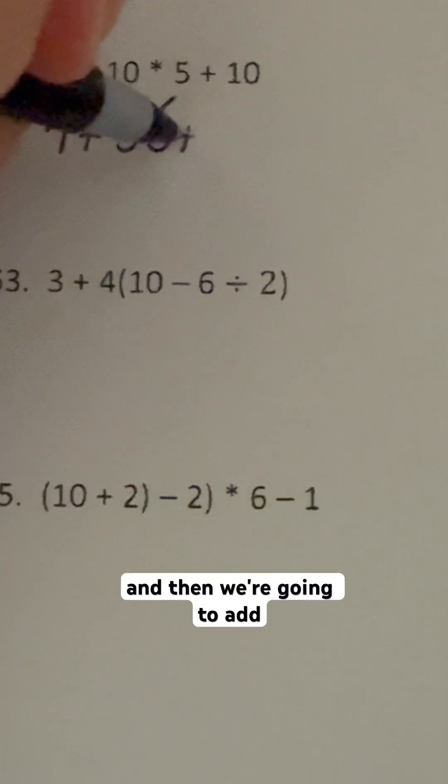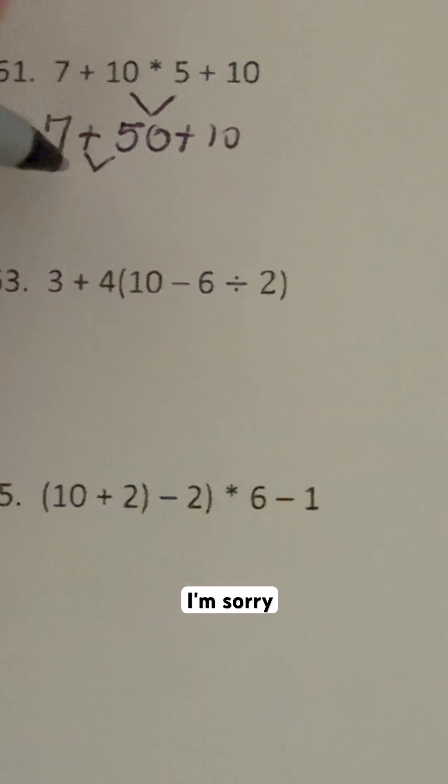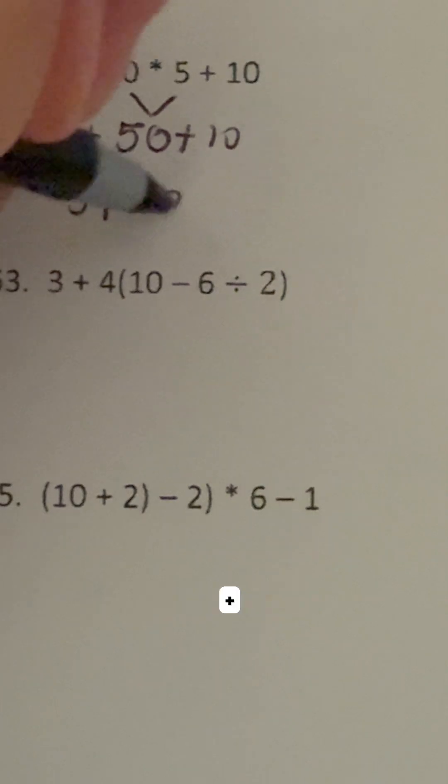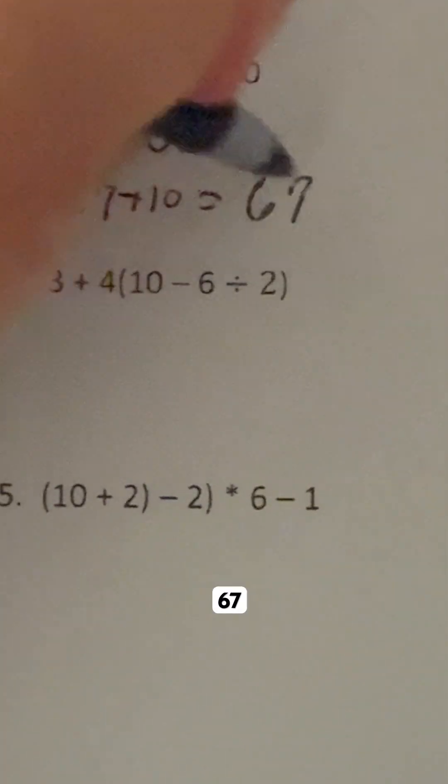And then we're going to add 10 after that. So when we add 50 and 7, you get 57 plus 10, which is, of course, our favorite answer, 67.